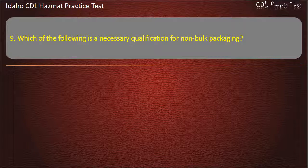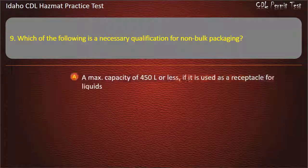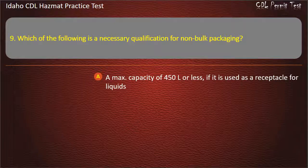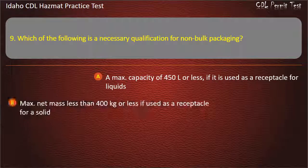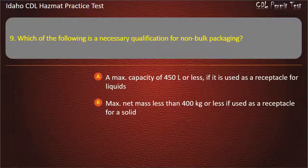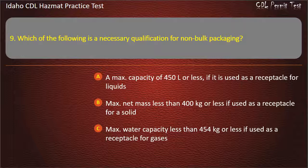Question 9. Which of the following is a necessary qualification for non-bulk packaging? A max capacity of 450 liters or less if it is used as a receptacle for liquids. Net mass less than 400 kilograms or less if used as a receptacle for a solid. Max water capacity less than 454 kilograms or less if used as a receptacle for gases. All of the above. Answer: All of the above.